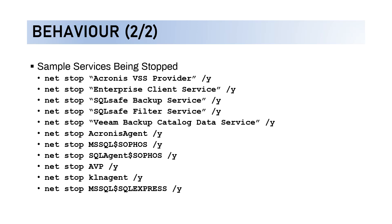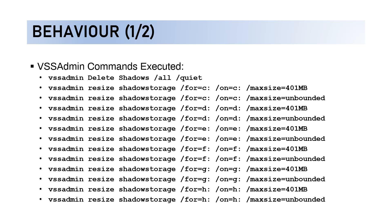Conti will also stop a large number of services. Examples of services being stopped include Acronix VSS Provider, Enterprise Client Service, SKLC Backup Service, SKL Save Filter Service, Theme Backup Catalog, Acronix Agent, Sophos, MSSKL Antivirus, and more. These two activities — deleting shadow copies and stopping services — are done to ensure that encryption goes smoothly and there is no way to recover the encrypted files.